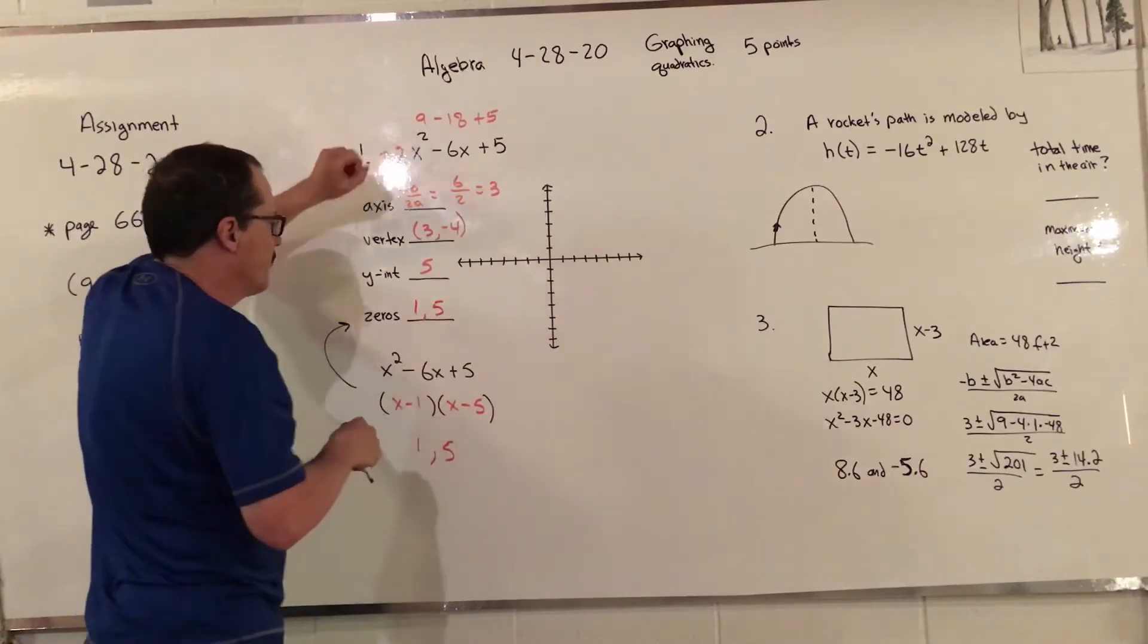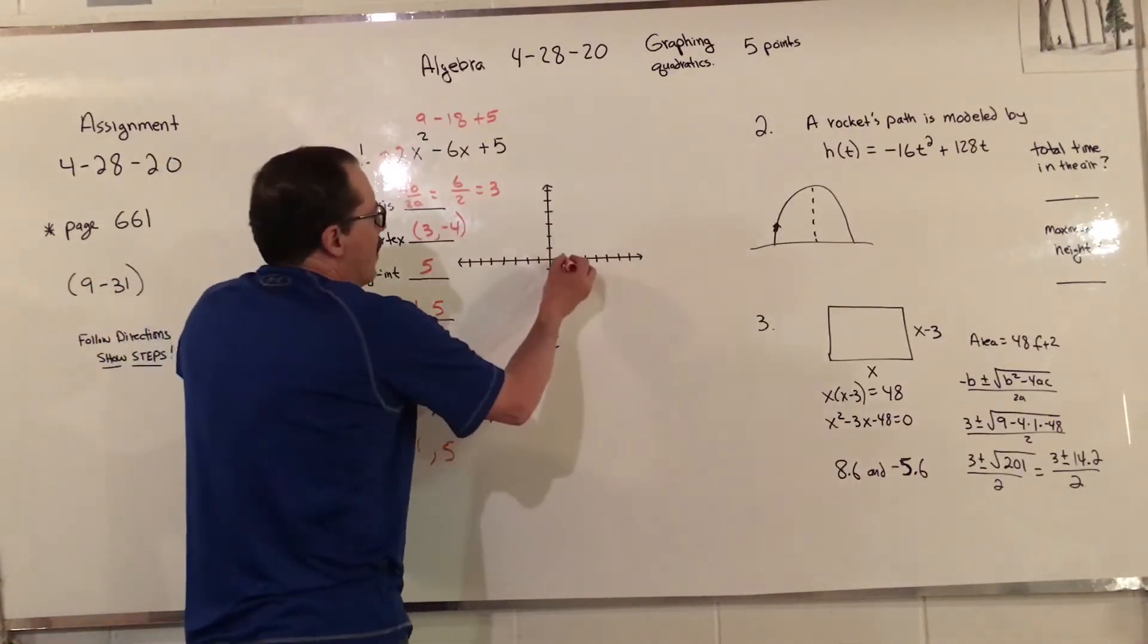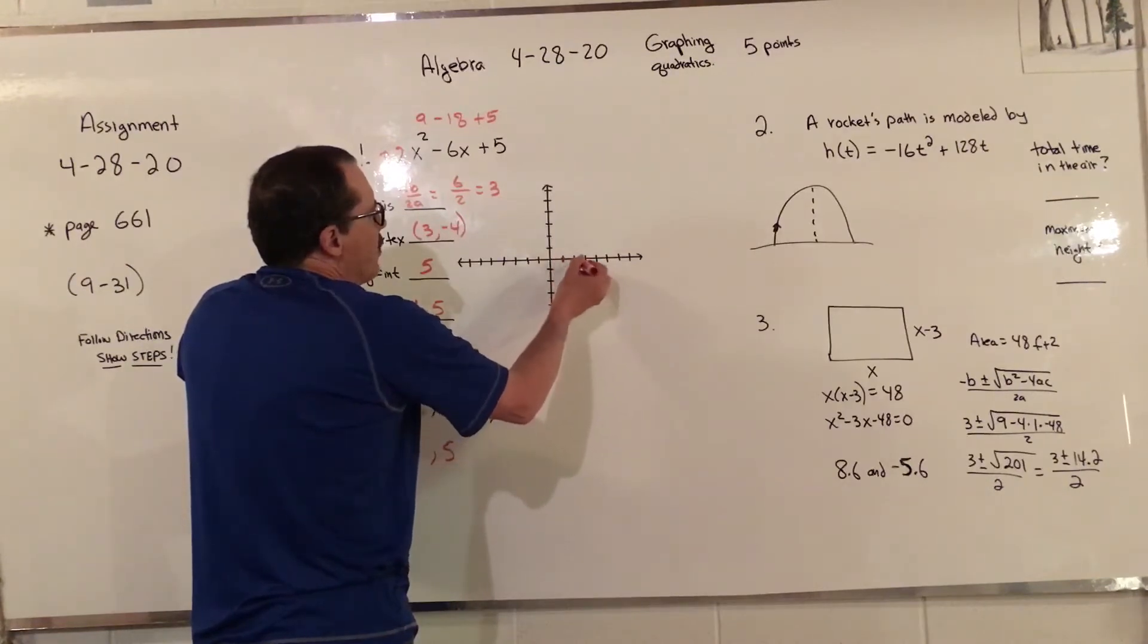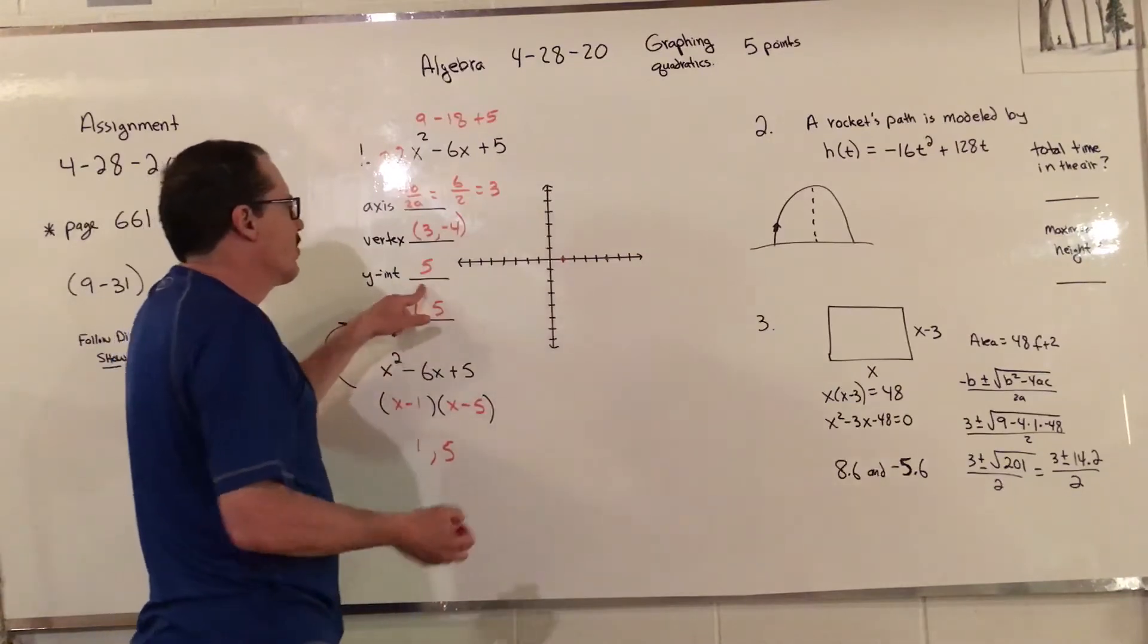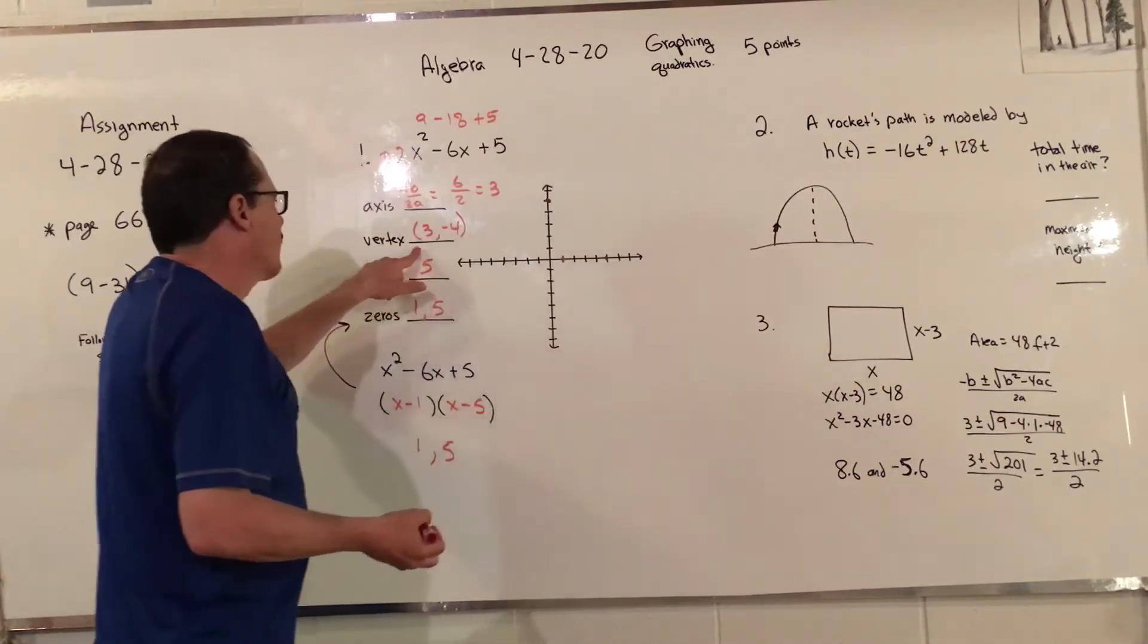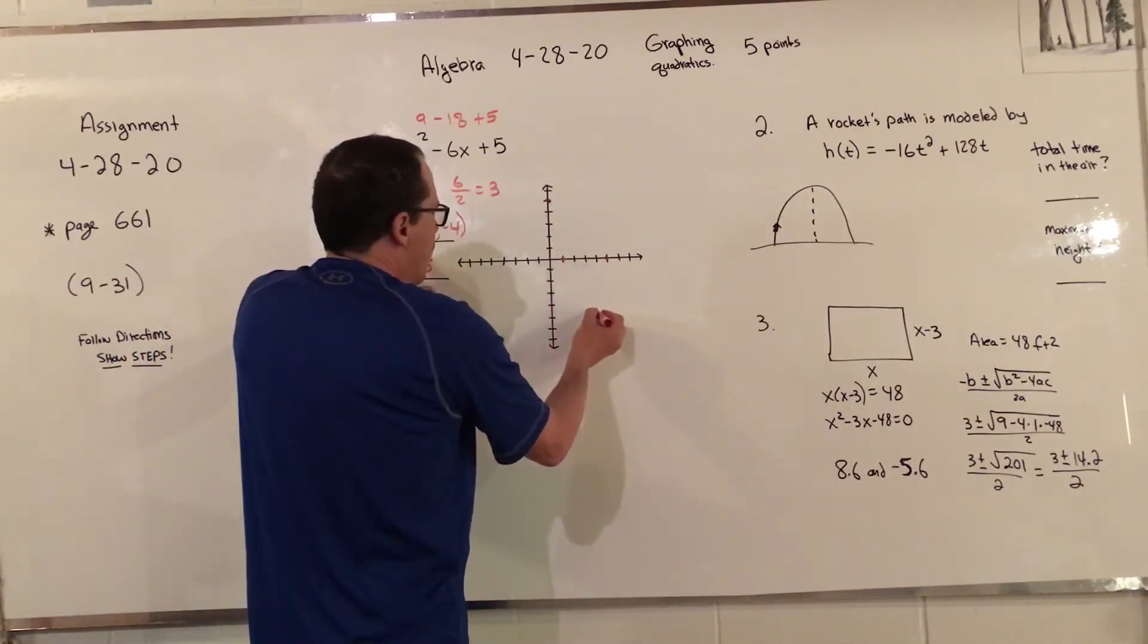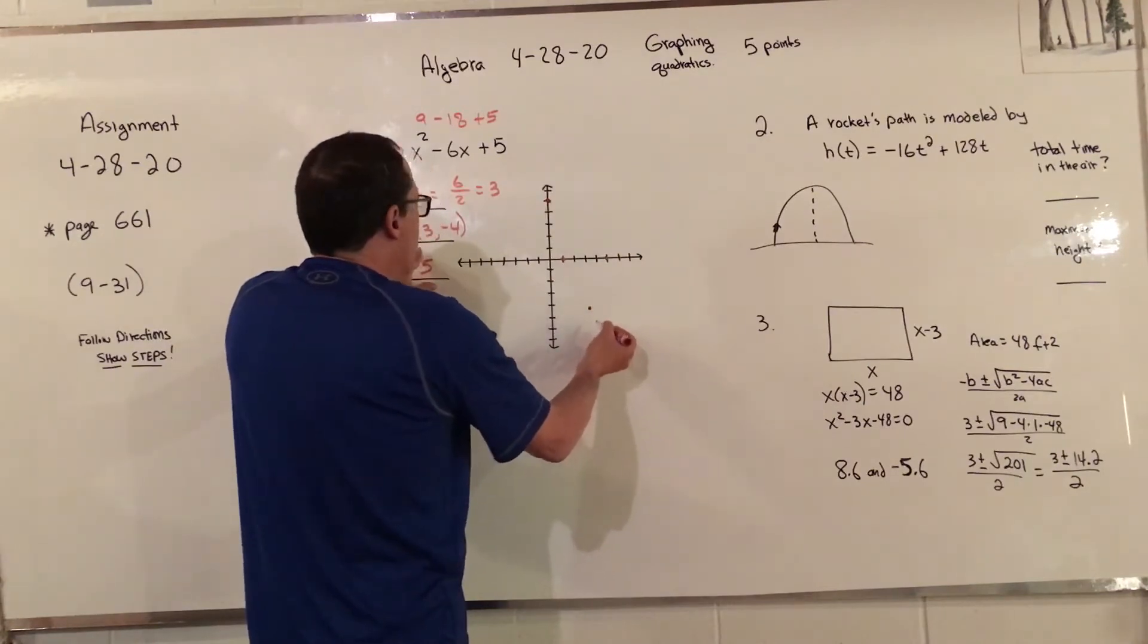I'm going to do this one backwards just for fun. I'm going to do zeros first, 1 and 5. The y-intercept is 5, so 1, 2, 3, 4, 5. And the vertex is at 3, negative 4, so 1, 2, 3 and down 4.